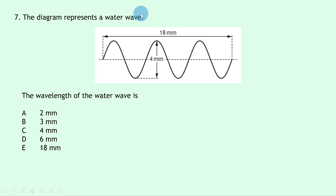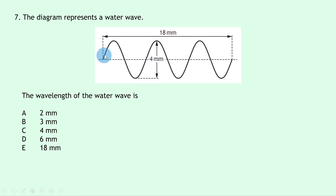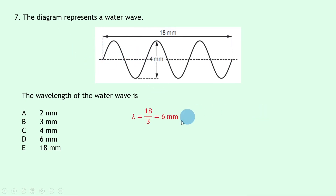Question 7 shows a water wave diagram with a total distance of 18 millimetres. Wavelength is not related to vertical height — that would be amplitude. Counting the full waves across the 18 mm, there are three complete waves. So the wavelength lambda = 18 / 3 = 6 millimetres — answer D.